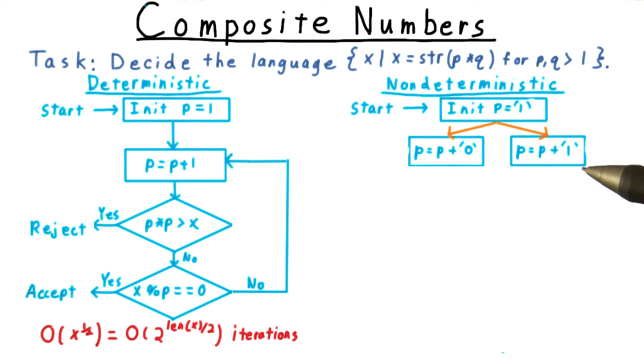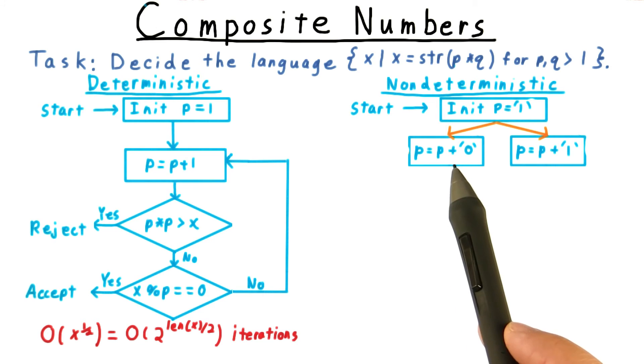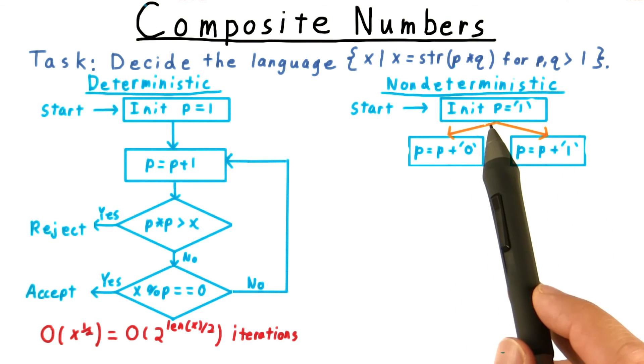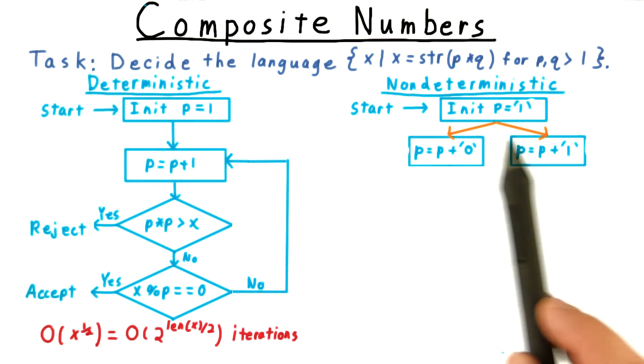We then nondeterministically modify p. By having two possible transitions for the same state symbol pair, we can nondeterministically append a bit to p. By the way, I'll mark all the nondeterministic transitions in orange here.